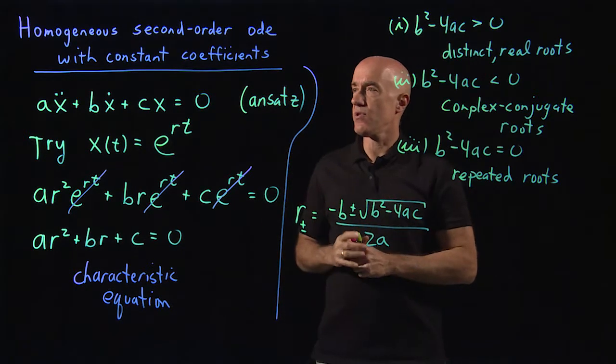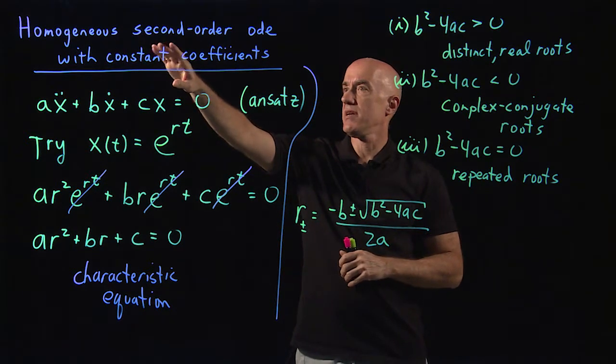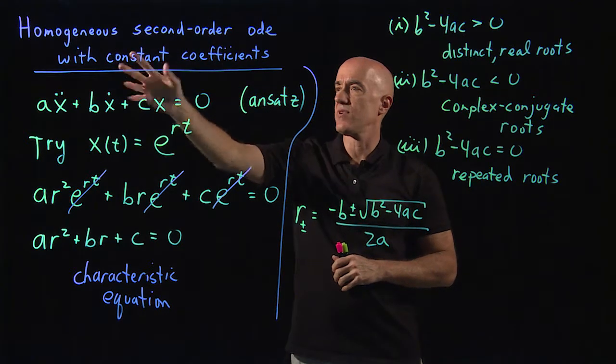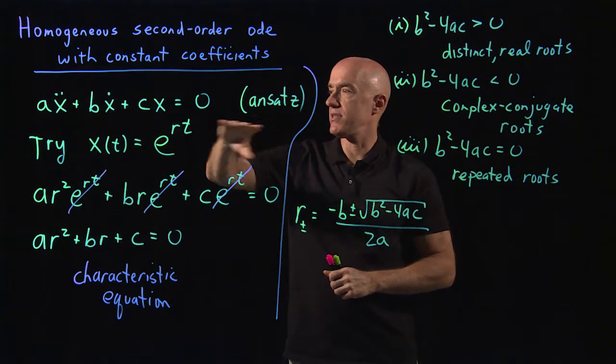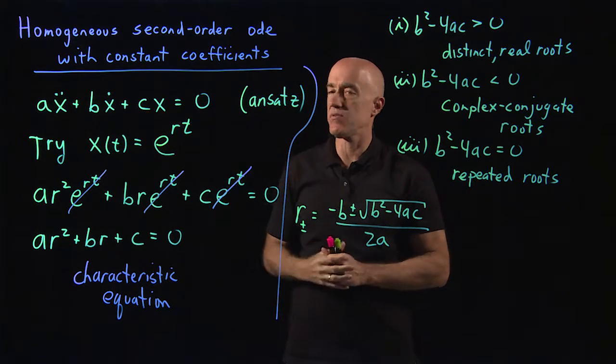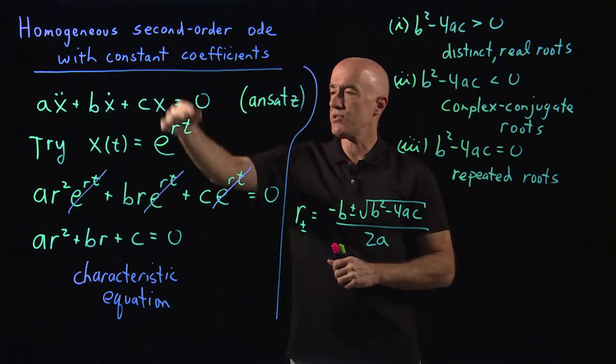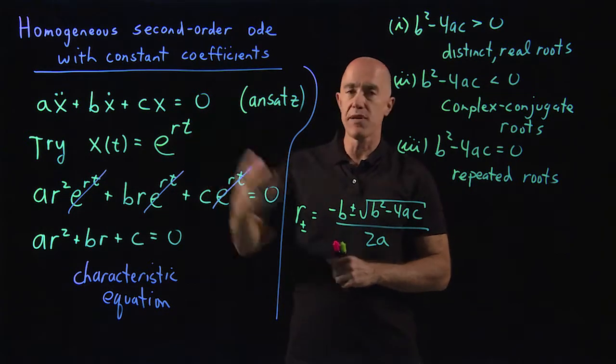So let me review. We're starting our study of homogeneous second order ODEs with constant coefficients. The general differential equation is just ax double dot plus bx dot plus cx equals 0.